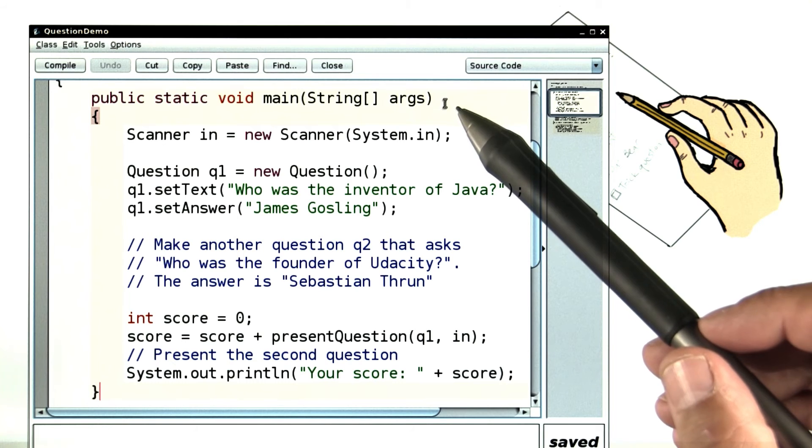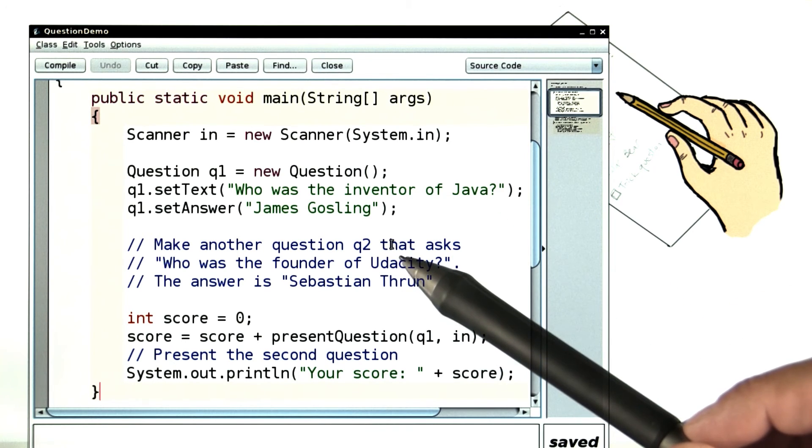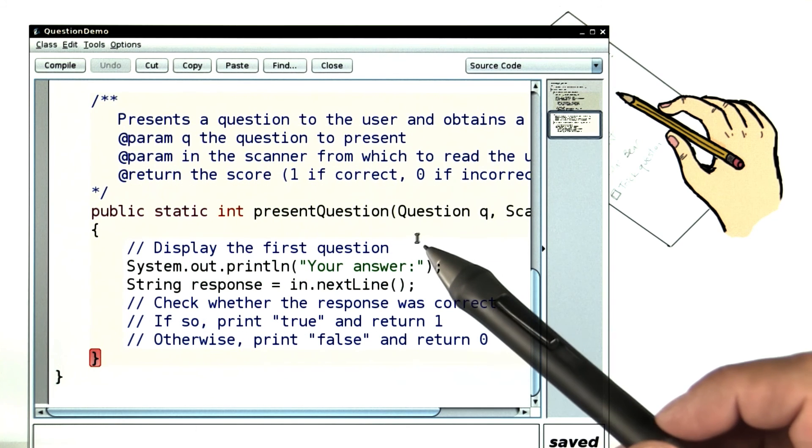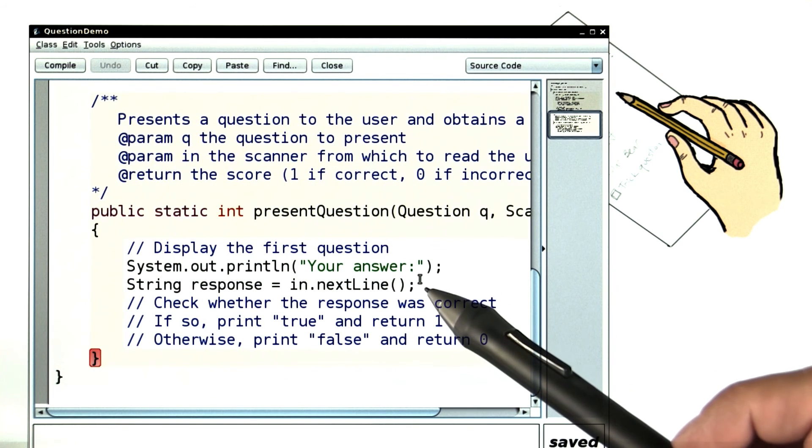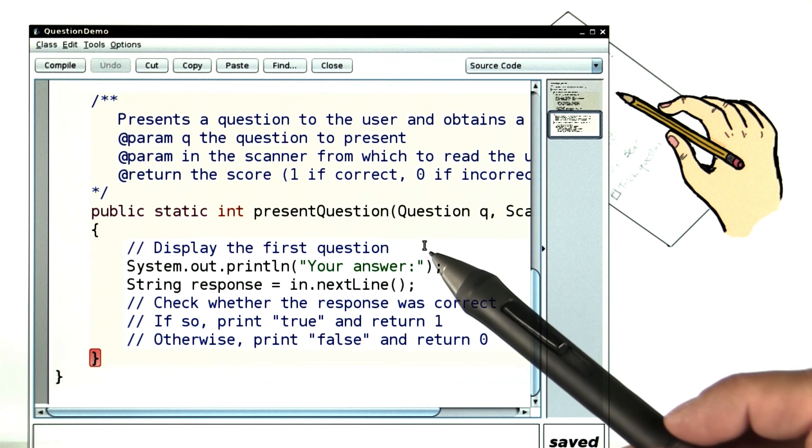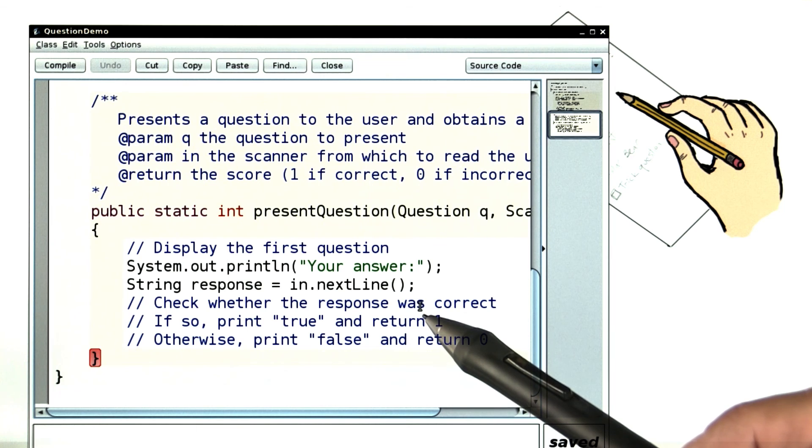And here is a demo program in which I want you to fill in some details. Make a question object, and then there is a method present question that displays a question, gets the user response, checks whether it was correct. There are methods for displaying and for checking a response, and I want you to look them up and call them.